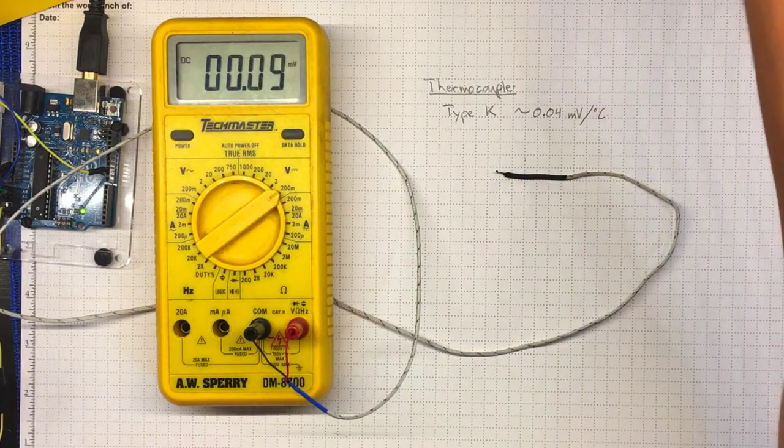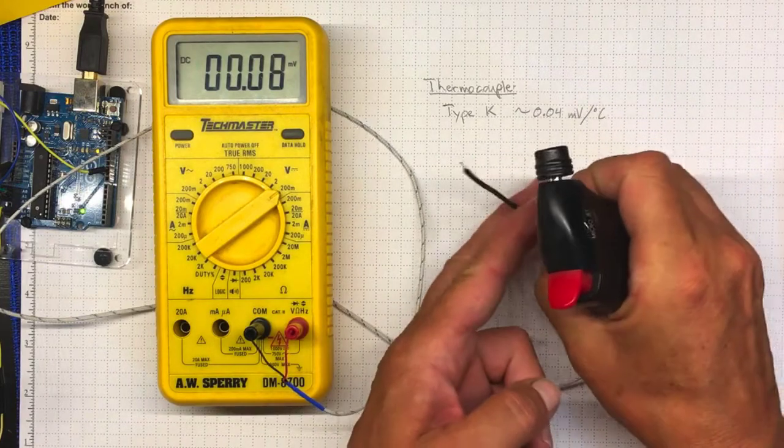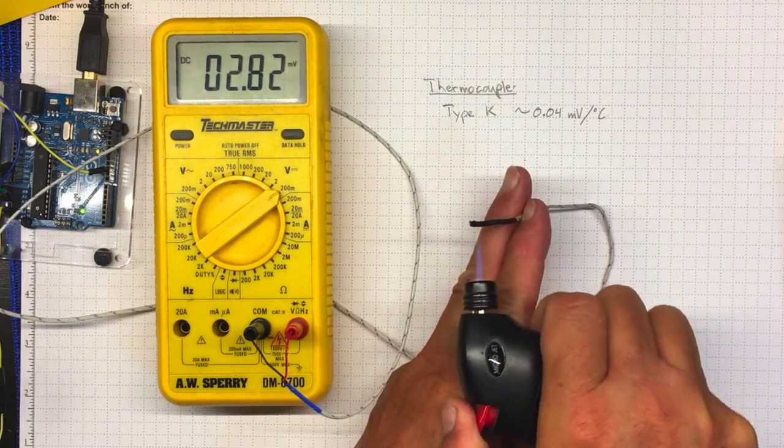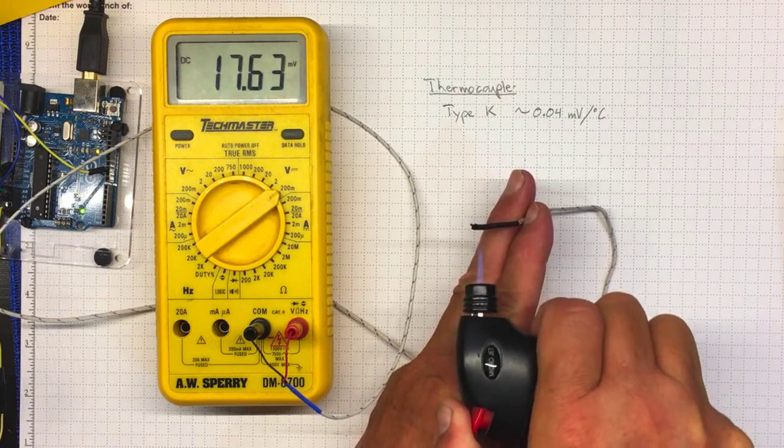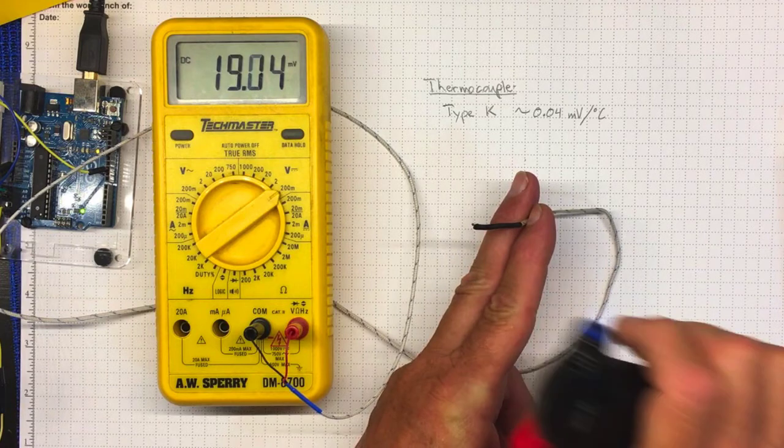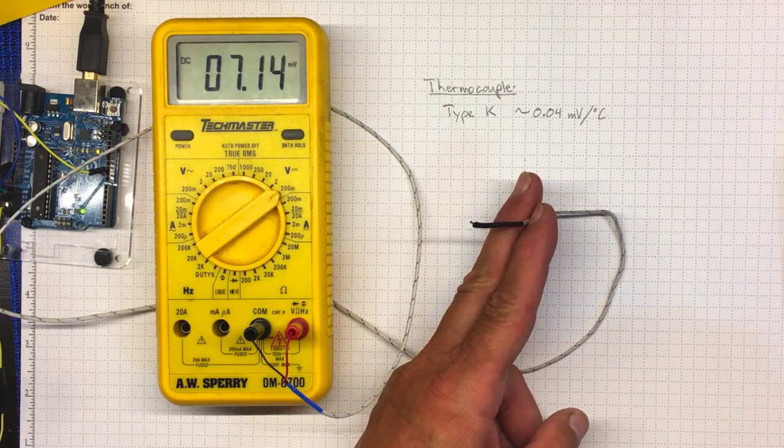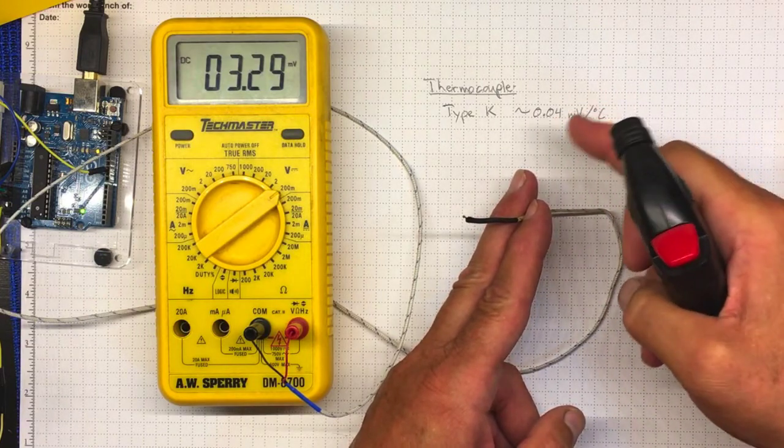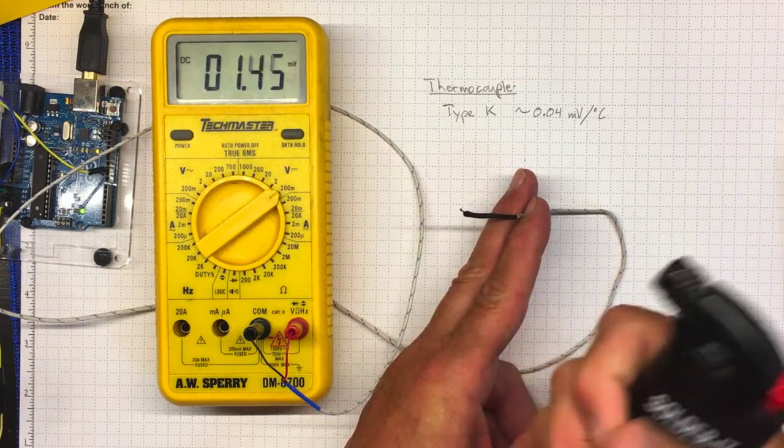If you happen to have a lighter in your pocket you could try something even more substantial and warm it up even higher. Now we're getting up to over 12 actual millivolts so 12 millivolts 4 millivolts would be 100 degrees Celsius 12 millivolts would be 300 degrees Celsius this little torch generates a fair bit of heat.